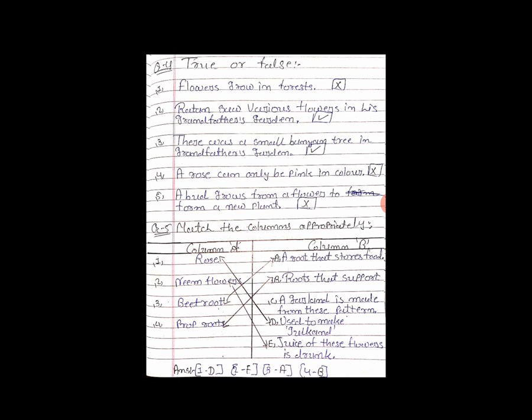Now question number 3 — There was a small banyan tree in grandfather's garden. Dada ke garden mein banyan tree bhi tha. Sahi ya galat? True — kyunki dada ke garden mein ek chhota sa banyan tree tha. So right sign in the box. Very good.